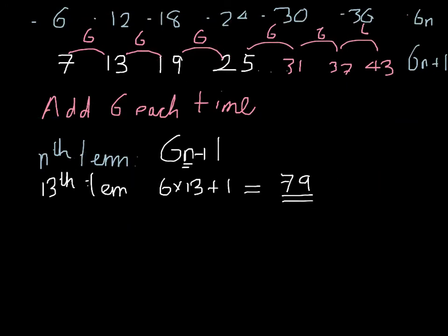So that's why the nth term is really helpful. It can help you work out a high term. For example, the 100th term would be equal to 6 multiplied by 100, add 1, which is equal to 601. Simple as that. And that saves you a lot of time from counting up in 6s.